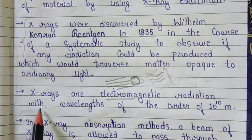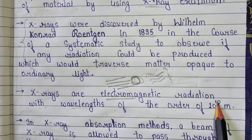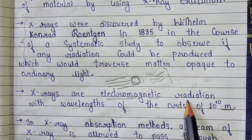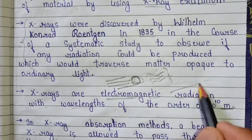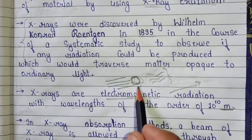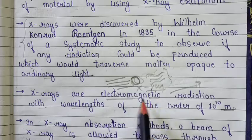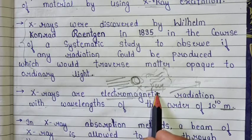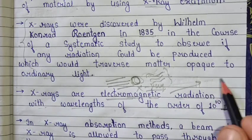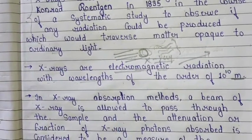X-rays are electromagnetic radiations — basically one kind of electromagnetic radiation — with a wavelength of the order of 10 to the power of minus 10 meters. Electromagnetic radiation is used in almost all spectroscopic techniques, and X-rays are one kind of electromagnetic radiation, which is why they are used in X-ray spectroscopy.